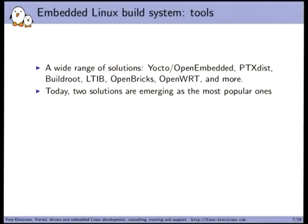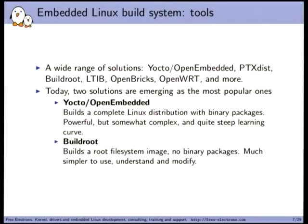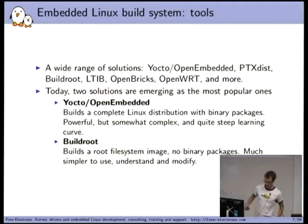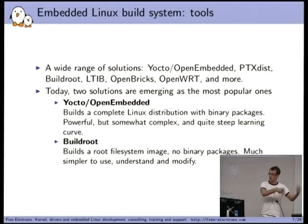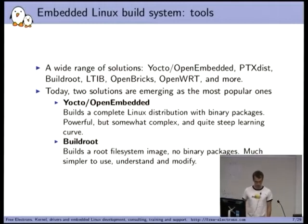Two solutions are emerging as the most popular. On one side is Yocto and OpenEmbedded, which allow you to build a complete Linux distribution with binary packages — essentially your own custom Debian — enabling systems that can upgrade, install, and remove applications. These are very powerful but somewhat complex with a steep learning curve. BuildRoot is the opposite: it simply builds a root filesystem image with no binary packages. If you want to change something, you go back into the tool, adjust the configuration, and recreate the image — which is perfectly fine for most industrial embedded Linux systems. It's also much simpler to use, understand, and modify.